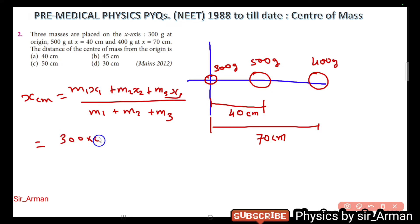Into 0 because it is lying at the origin. m2 is 500 and it is lying at 40 centimeters from origin. See, origin we have to consider from where the center of mass is asked, at which distance, right? So here it is asked from origin, right?